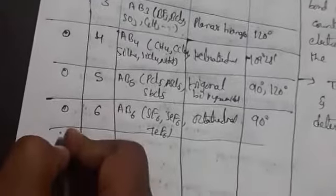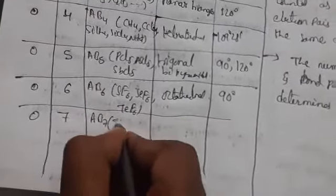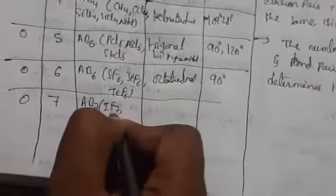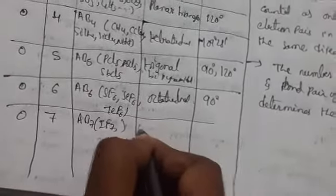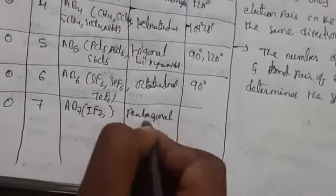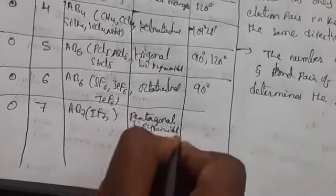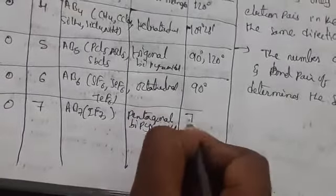With zero lone pairs and seven bond pairs, the molecule type is AB7 and the shape is pentagonal bipyramidal. An example is IF7. The bond angles are 72° and 90°.